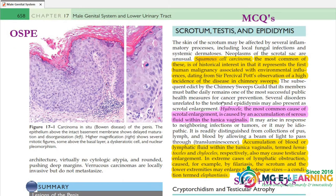The main MCQ topic starts with Scrotum, Testes, and Epididymis — this is also for MCQs. There is a diagram here for OSPI so that OSPI can also be prepared.